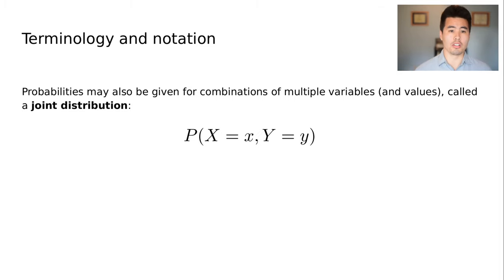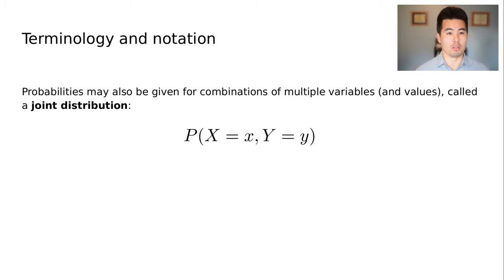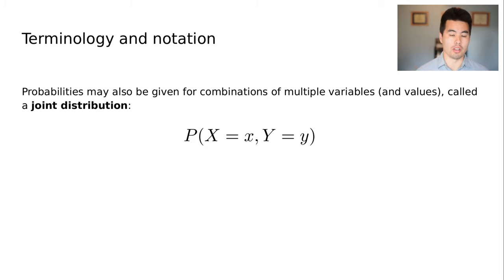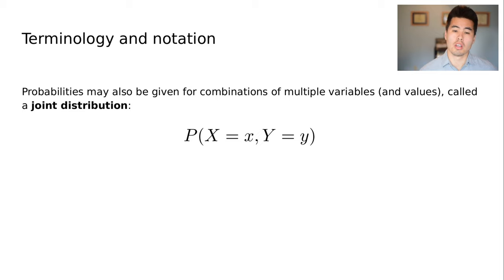We'll also largely be talking about single variables with just the notation P of capital X equals x, or for simplicity just P of X. But later in the lecture we'll touch on joint distributions, which is the probability of having specific values of multiple variables — so for example, that X has a certain value lowercase x, and that Y has a certain value lowercase y. Many things we'll talk about in the simpler case extend to joint distributions, but there are also some interesting properties specific to those.